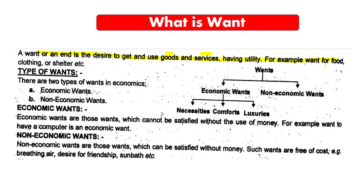Wants can be for things such as food and clothing. There are different types of wants. Economic wants are those wants which cannot be satisfied without the use of money. For example, a want to have a computer is an economic want. Economic want is so important.